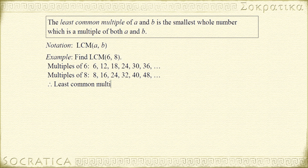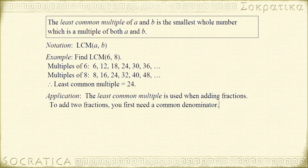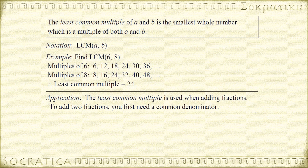So the least common multiple of 6 and 8 is 24. One of the most common applications of the least common multiple is when you're adding fractions. To add two fractions, you must first get a common denominator, and it turns out that common denominator is the least common multiple of the denominators. We'll see examples of that in other videos.